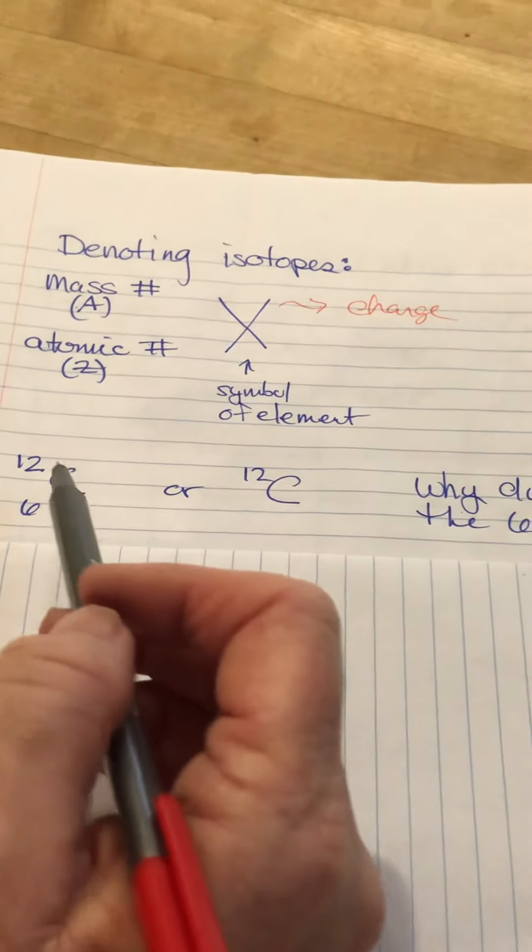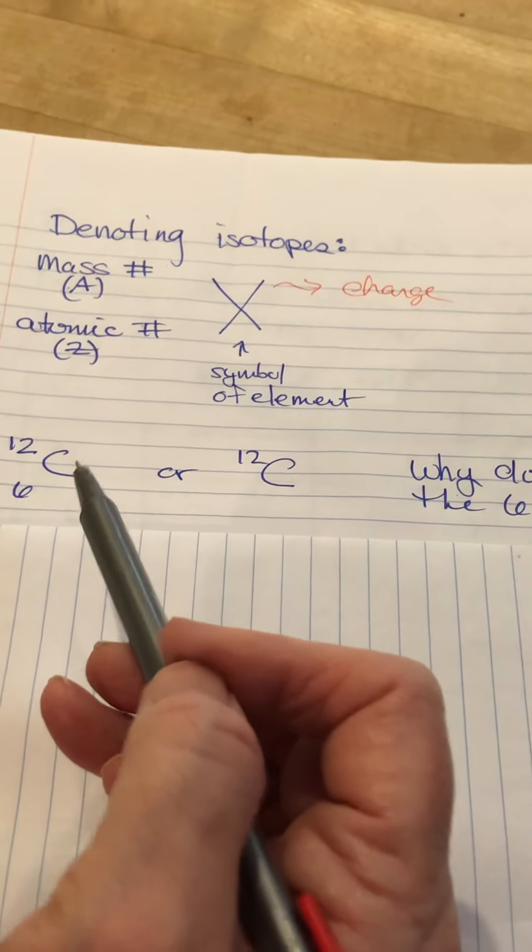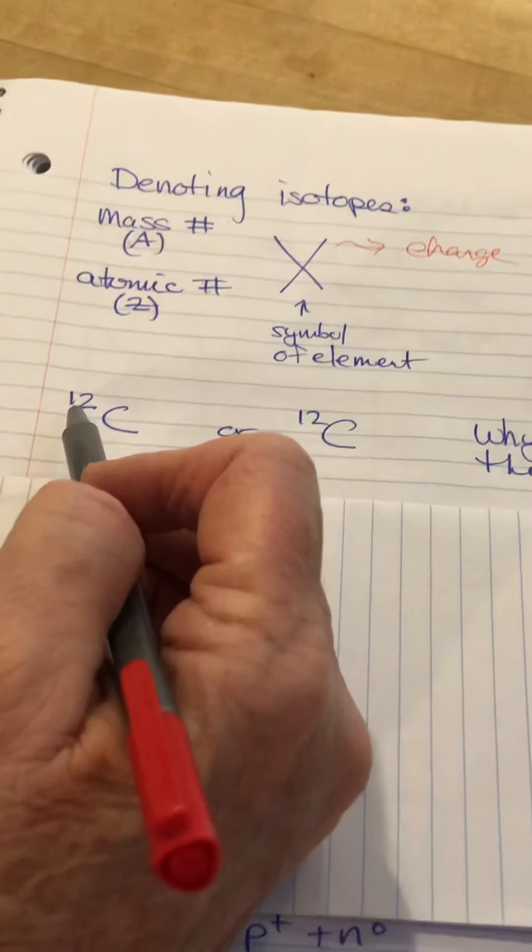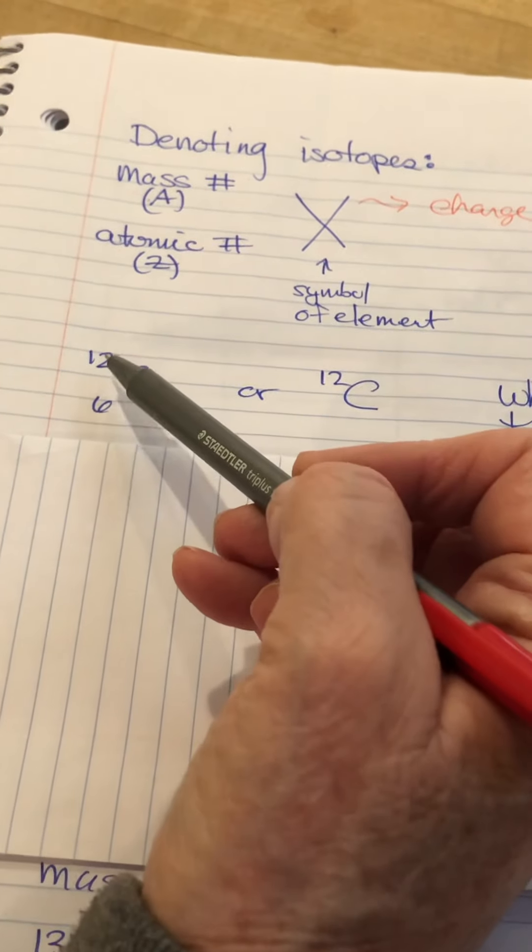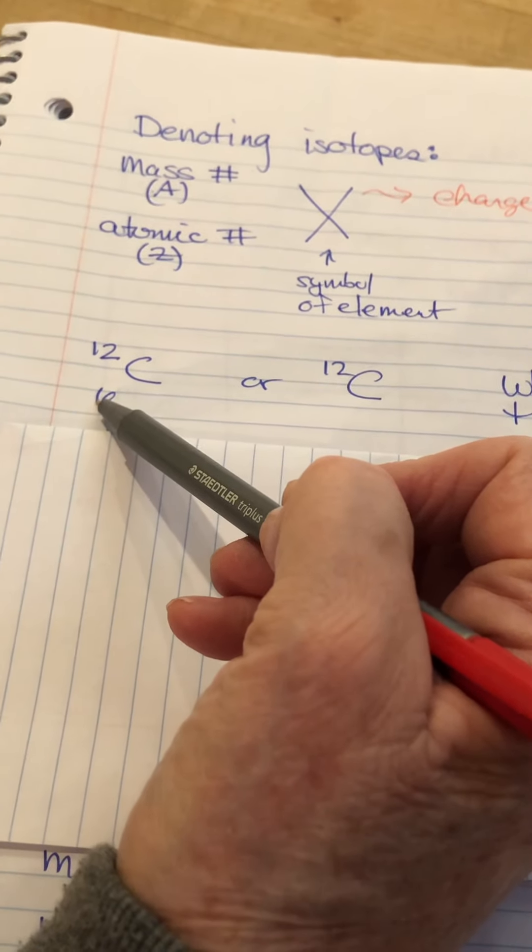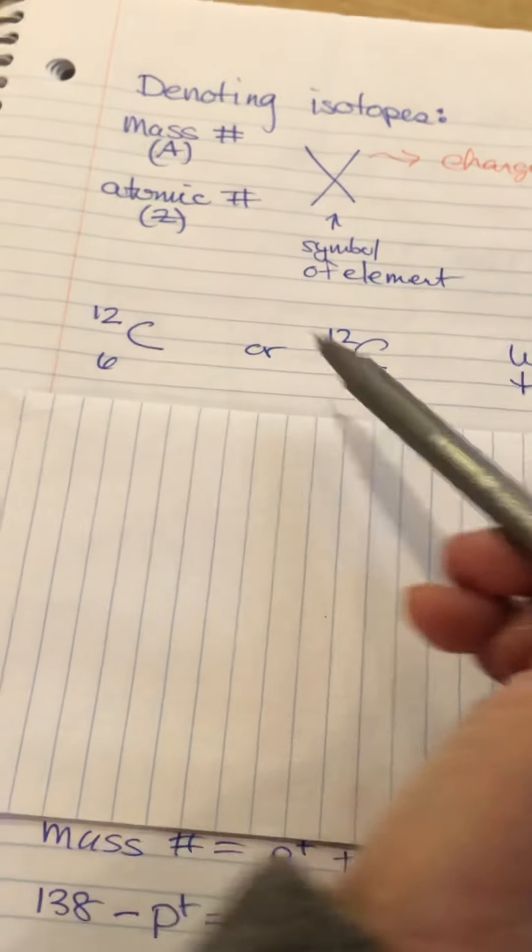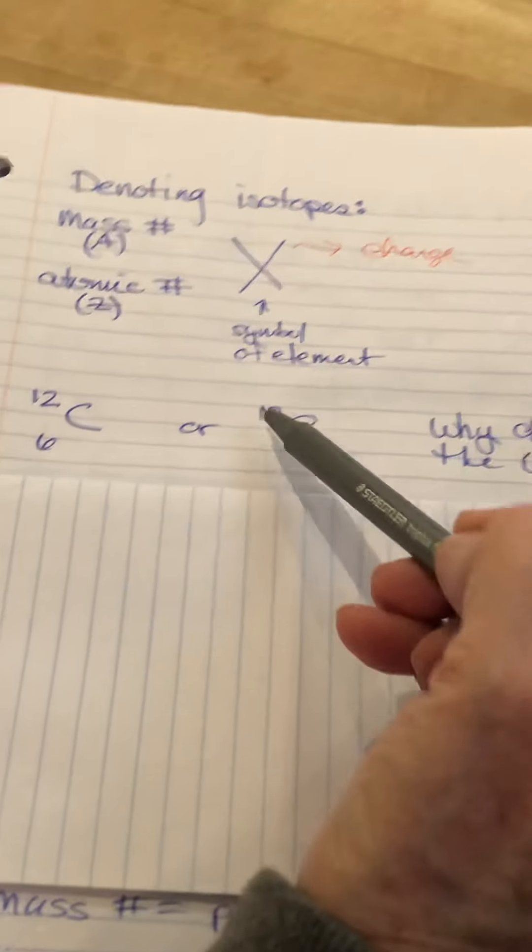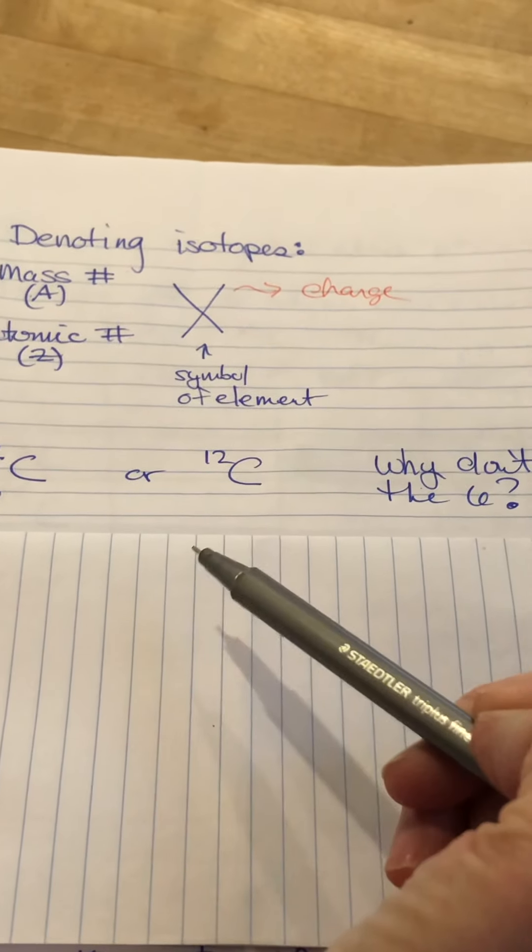For instance, if I am looking at carbon, carbon happens to have three isotopes. But right now I'm looking at carbon-12. I can write carbon-12 as a superscript 12 and a carbon and a subscript 6. Or I can write a superscript 12, a carbon and no 6.